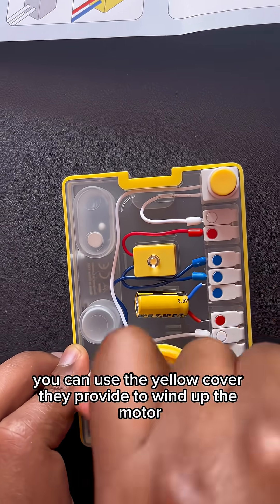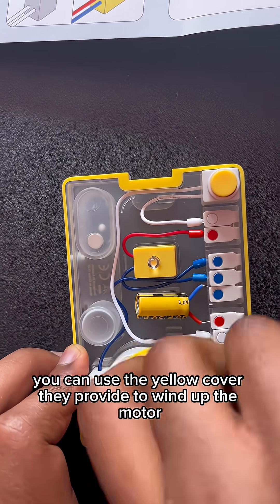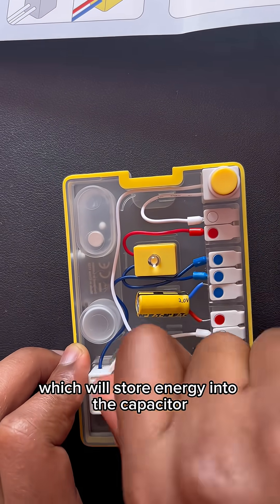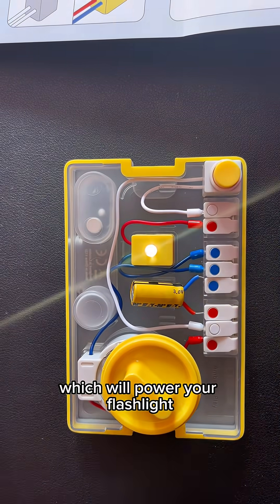Once everything is in, you can use the yellow cover that you provide to wind up the motor which will store energy into the capacitor and store it as electrical energy which will power your flashlight.